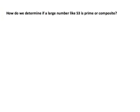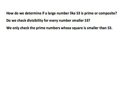In the last examples, the numbers were small and it was easy to determine whether they were prime or composite. But how do we determine if a large number, like 53, is prime or composite? Do we check divisibility for every number smaller than 53? That would be a large list. Fortunately, there's a way to narrow that list — we only need to check the prime numbers whose square is smaller than 53, and that's actually pretty easy to do.